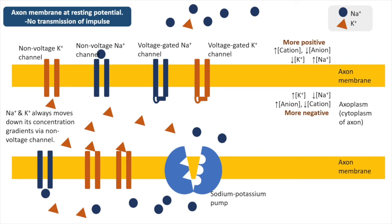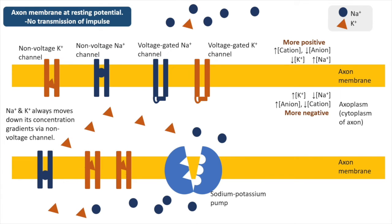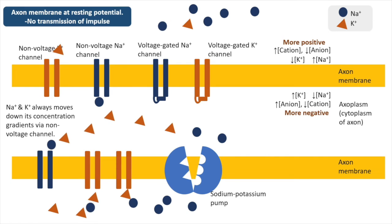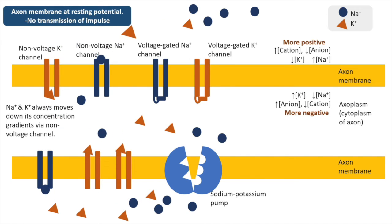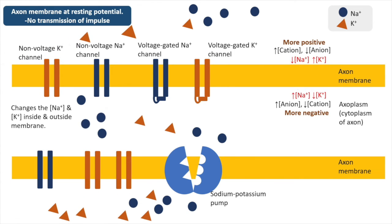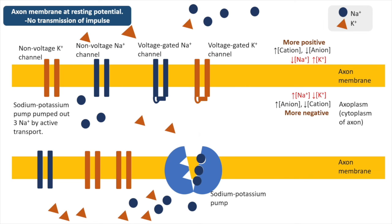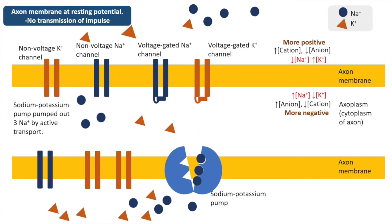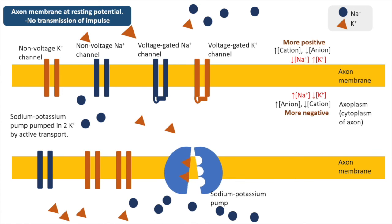These ions have a concentration gradient across the plasma membrane of a neuron. In most neurons, the concentration of potassium ions is higher inside the cell, while the concentration of sodium ions is higher outside of the cell. The concentration gradient of potassium ions and sodium ions are maintained by the sodium-potassium pump. This pump uses the energy of ATP hydrolysis to actively transport sodium ions out of the cell and potassium ions into the cell. The sodium-potassium pump transports three sodium ions out of the cell for every two potassium ions that it transports in.